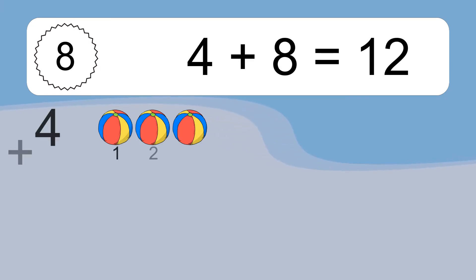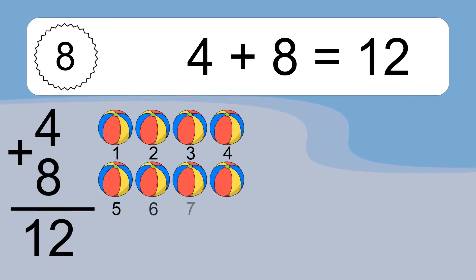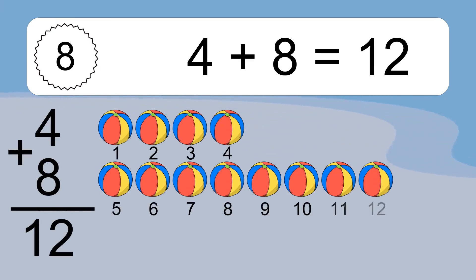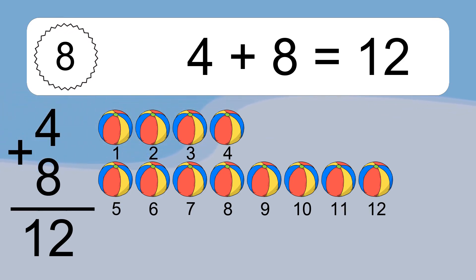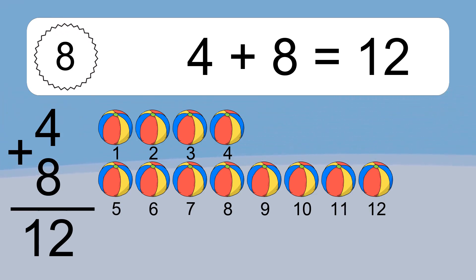4 plus 8 equals what? 4 plus 8 equals 12. Let's count it. 1, 2, 3, 4, 5, 6, 7, 8, 9, 10, 11, 12.